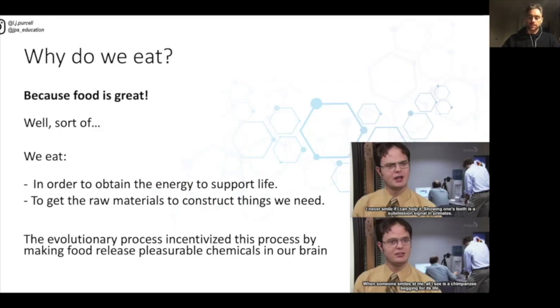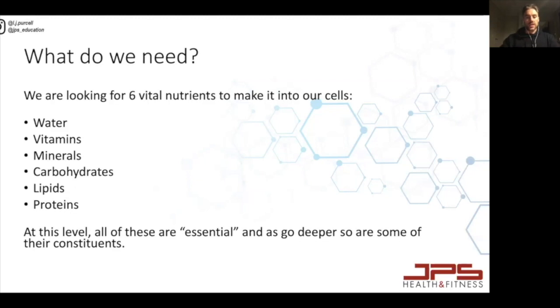So what do we need when we eat? We are looking for six vital nutrients to make it into ourselves: water, vitamins, minerals, carbohydrates, lipids, and proteins. There's no alcohol on there, just for everyone playing along at home. At this level, all of these are essential, and as we go deeper, so are some of their constituents. You'll often hear things like essential vitamins, essential minerals, essential fatty acids, or essential amino acids. There are certain subcategories of these nutrients that we just cannot make enough of in our body.